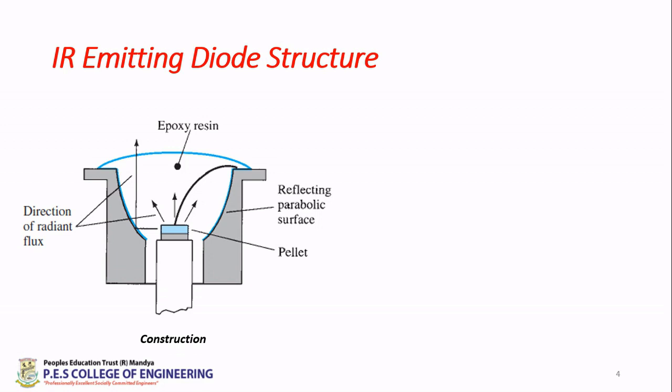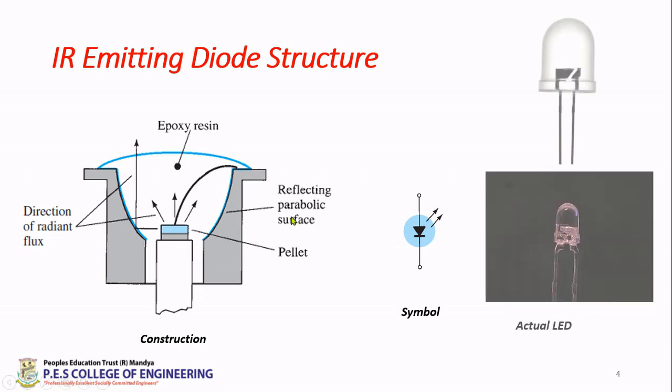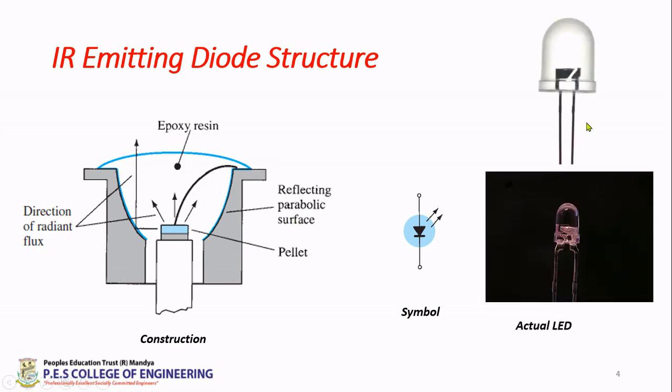We call this as pellet, and the interior structure is a parabolic reflecting surface. The symbol is a normal diode with arrow marks—arrow marks correspond to emitting some form of light. Here it is IR; it might be different wavelengths. This picture shows an IR emitting LED.